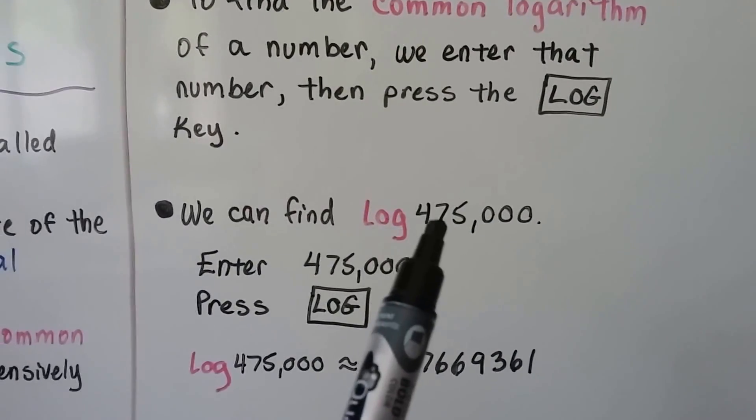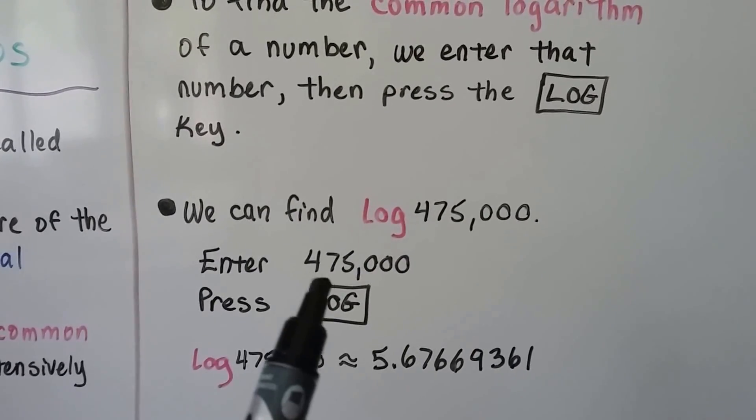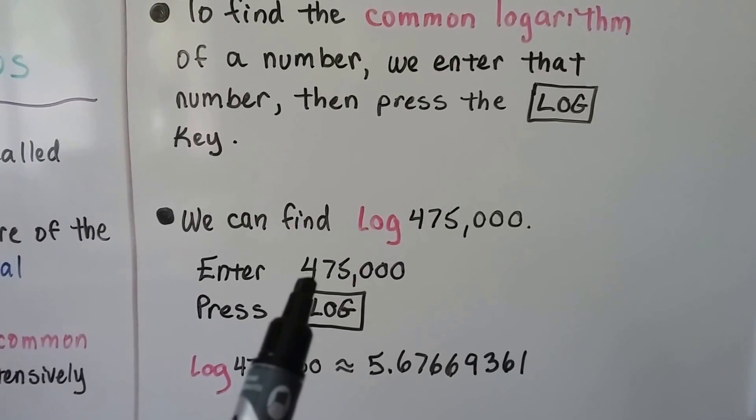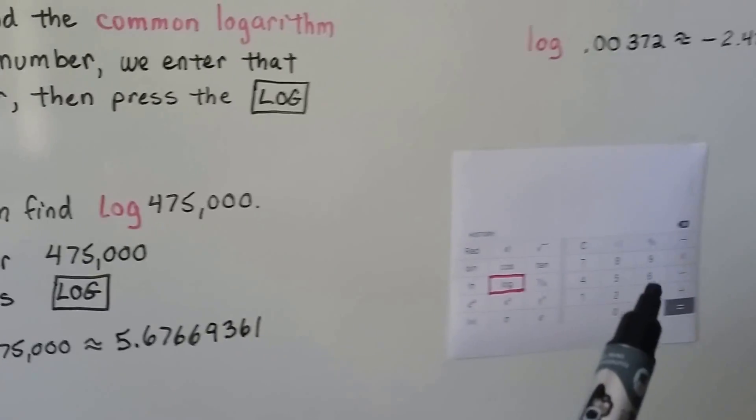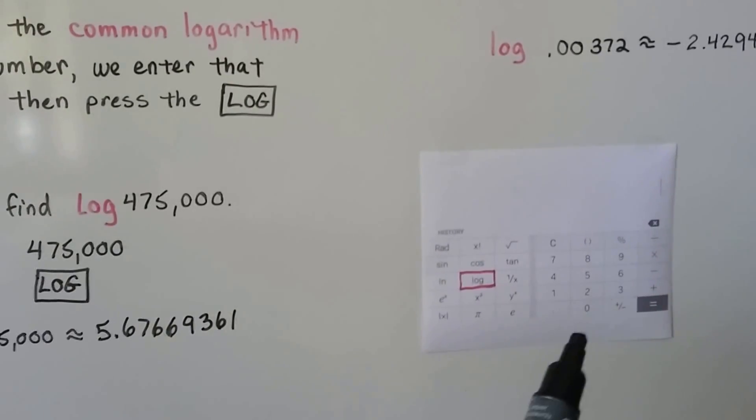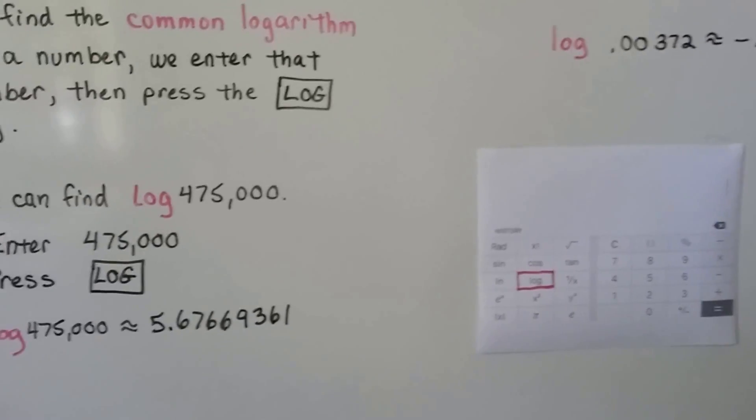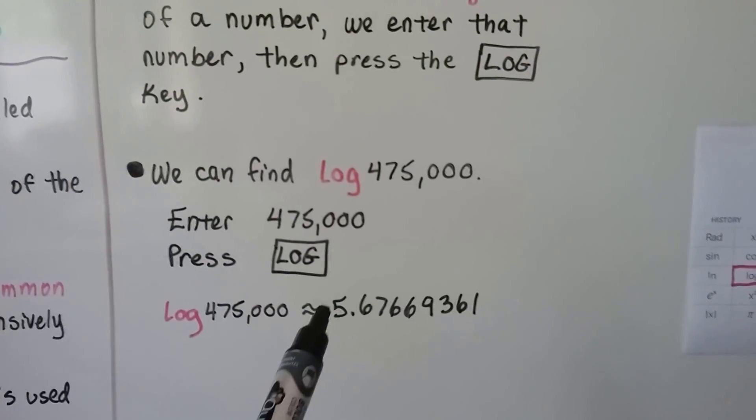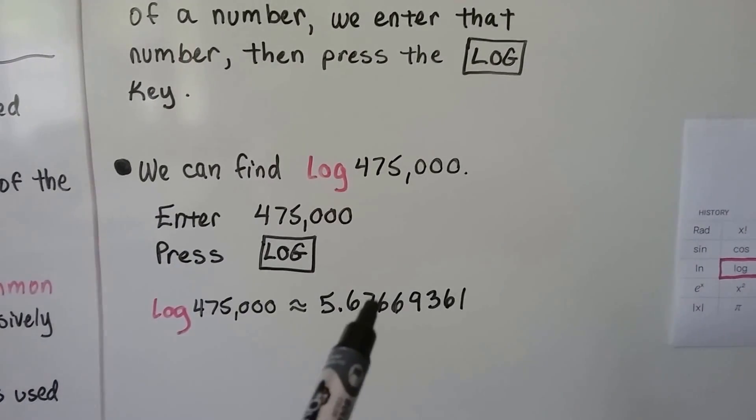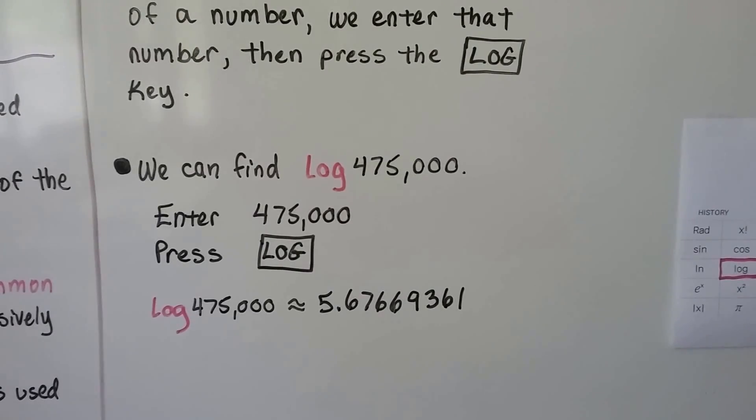If we want to find log 475,000 on this scientific calculator, we would hit 475,000 and just hit the log button. That would tell us it was approximately 5.67669361.